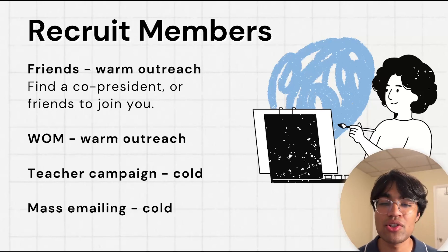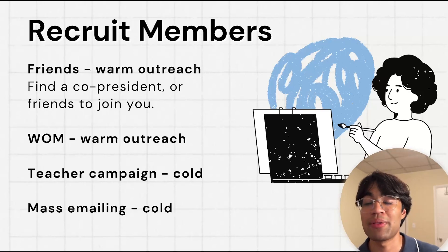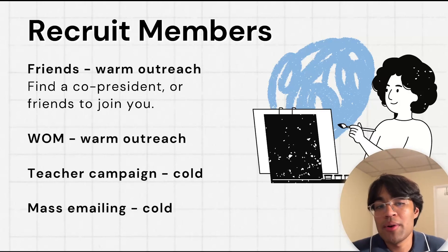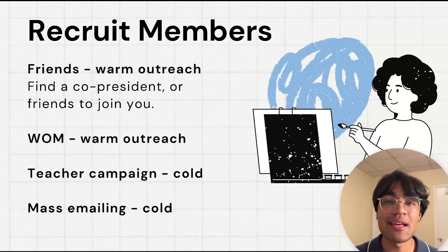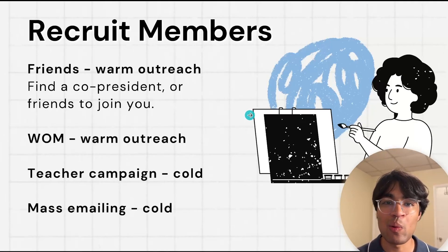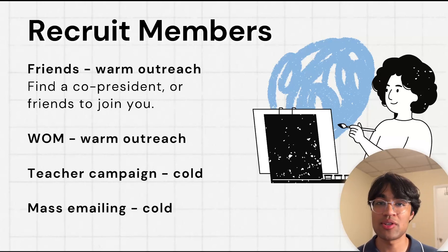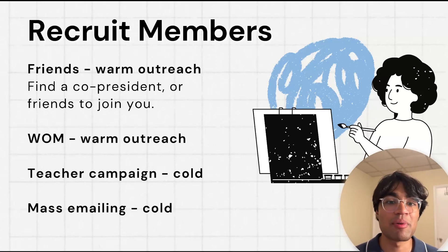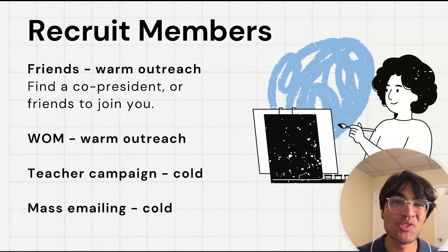The first is to go to friends — warm outreach. Ask your friends to join you as co-president and provide everyone with a leadership role so they truly feel motivated to help out. The second is word of mouth — also warm outreach — where you go in person at your school to people in your classes who may be interested and just ask them to join. The next is a teacher campaign, which I think is really effective. Reach out to an amazing teacher from a couple years back who has science students that might be interested, shoot them an email, and get them to promote your club. That'll help you grow massively because you now have a teacher endorsement.